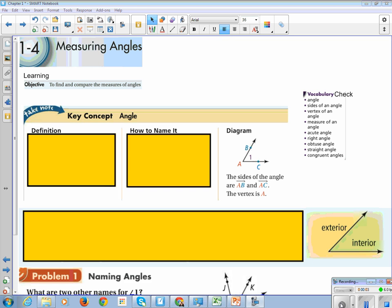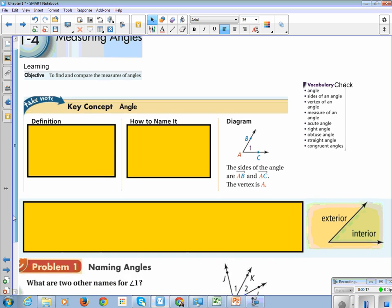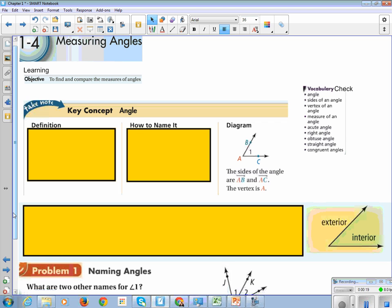All right, this is Geometry Section 1-4, Measuring Angles. Our learning objective is to find and compare measures of angles. For this entire class, our angles are going to be all in degrees.